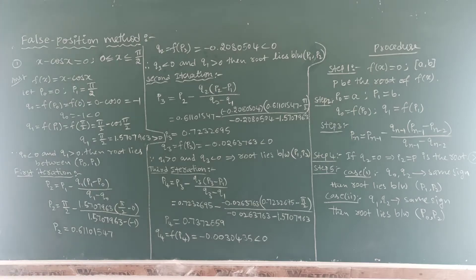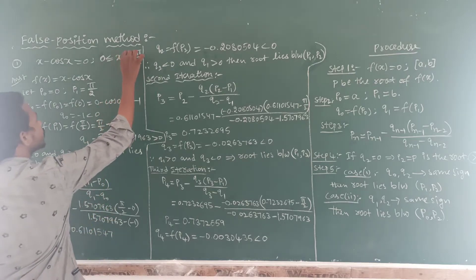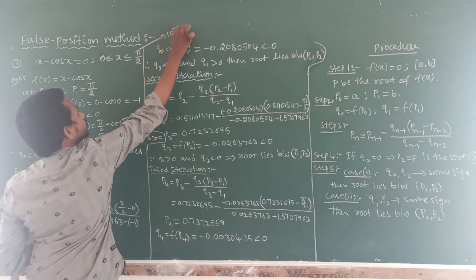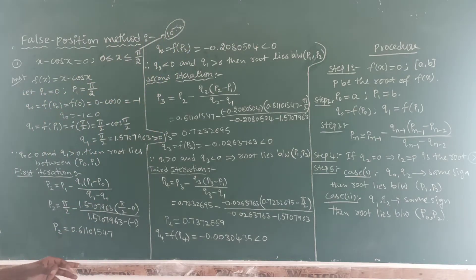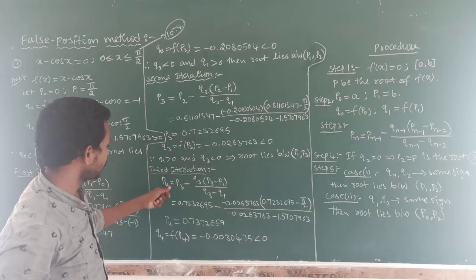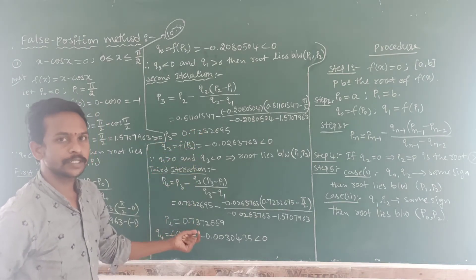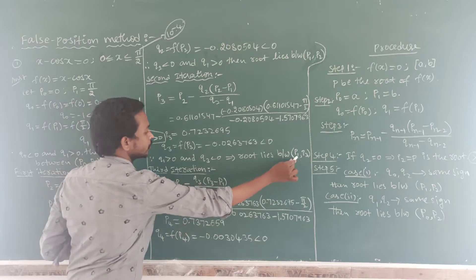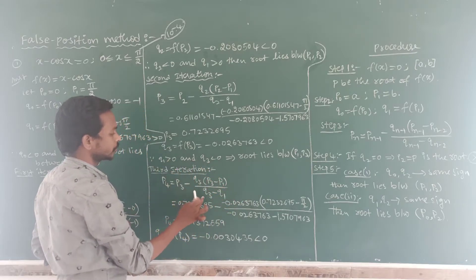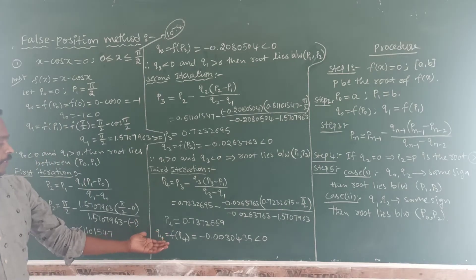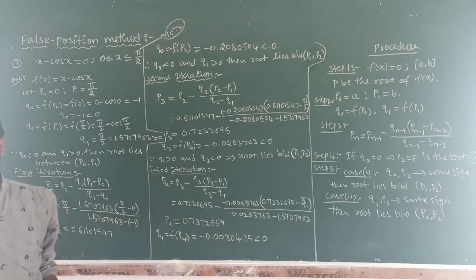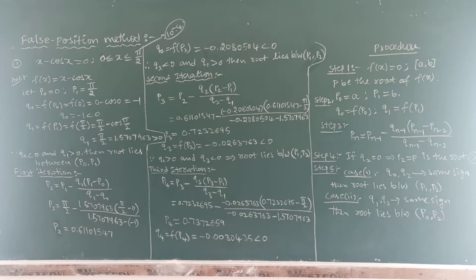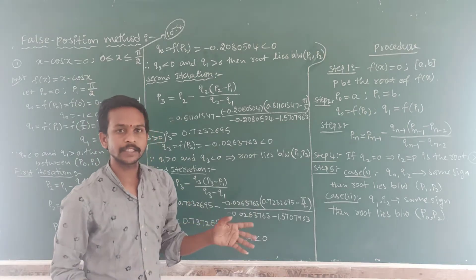Up to 4 decimal places, we go to the third iteration for P3 and P4. For the third iteration, P3 is computed as: P3 = P1 − Q1 × (P3 − P1) / (Q3 − Q1). We follow the same order, then for the fourth iteration we go to the graph again.